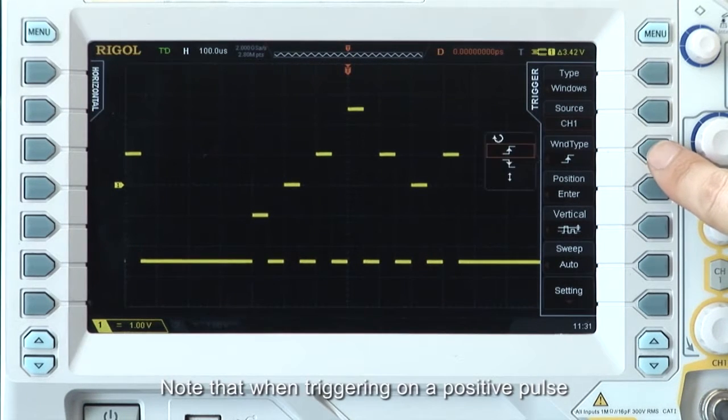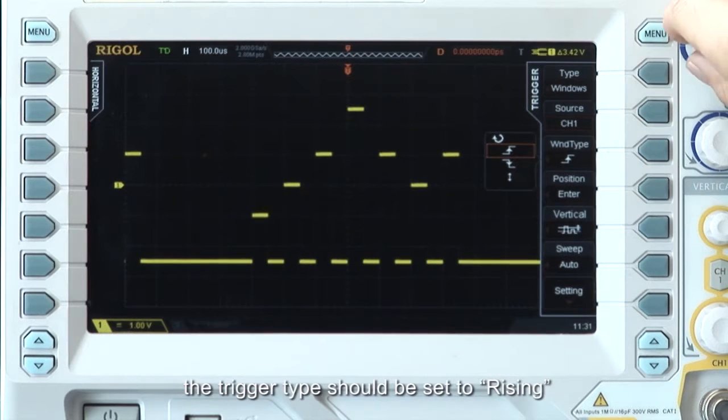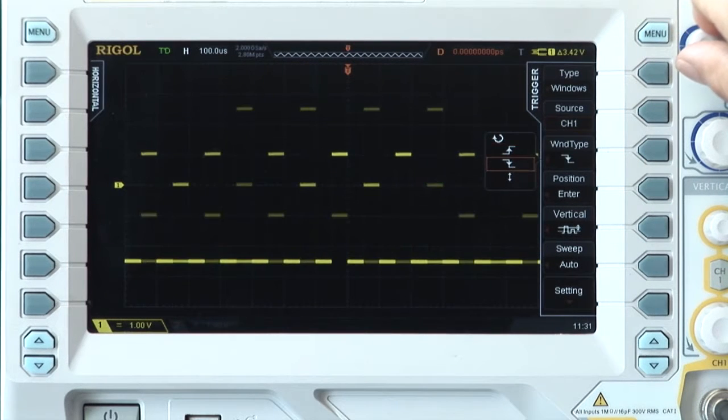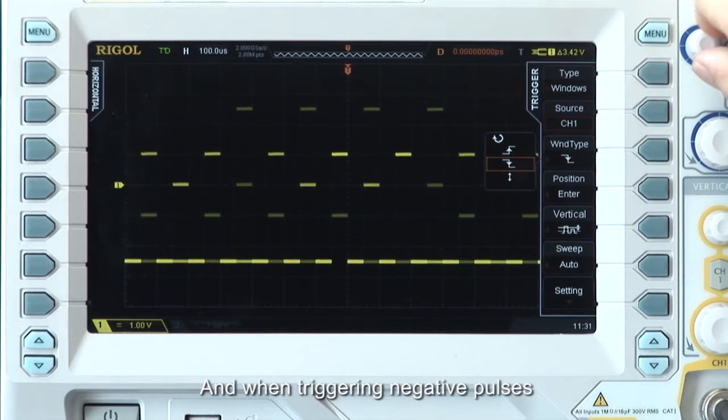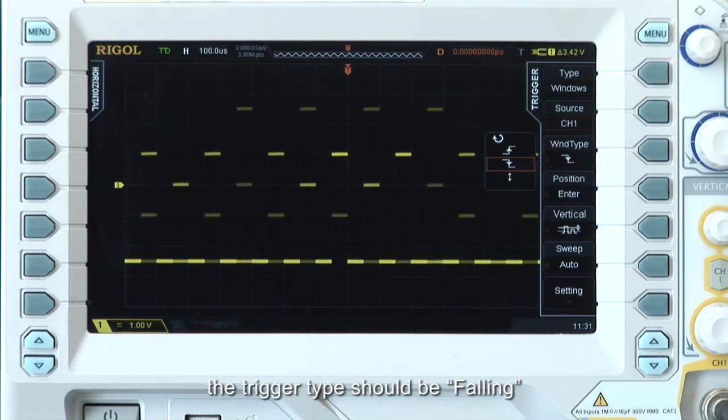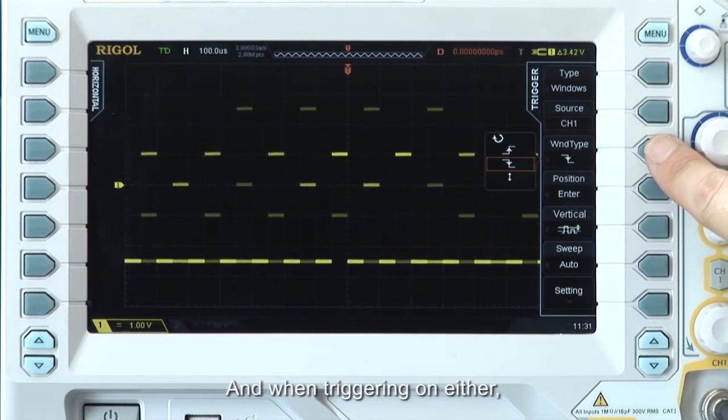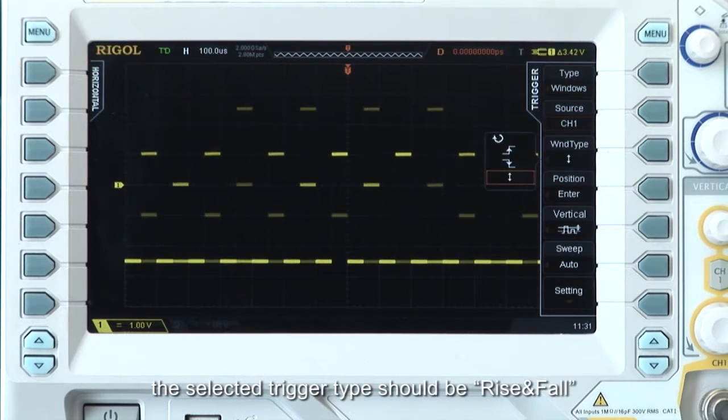Note that when triggering on a positive pulse, the trigger type should be set to Rising. When triggering on a negative pulse, the trigger type should be set to Falling. And when triggering on either, the selected trigger type should be rise and fall.